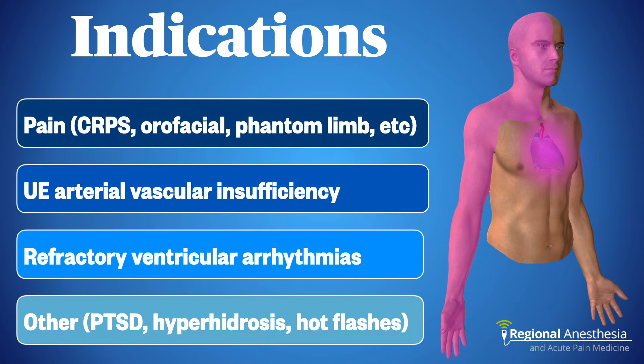Another indication is upper extremity arterial vascular insufficiency — patients with scleroderma, Raynaud's syndrome, or vasospasm benefit from the arterial vasodilation that the local sympathectomy provides. Because the sympathetic innervation of the heart largely passes through the stellate ganglion, blockade here is very effective in managing refractory ventricular arrhythmias. Finally, there is a grab bag of other indications where sympathectomy or reduction in circulating norepinephrine may help, including post-traumatic stress disorder, hyperhidrosis, and hot flashes associated with menopause.